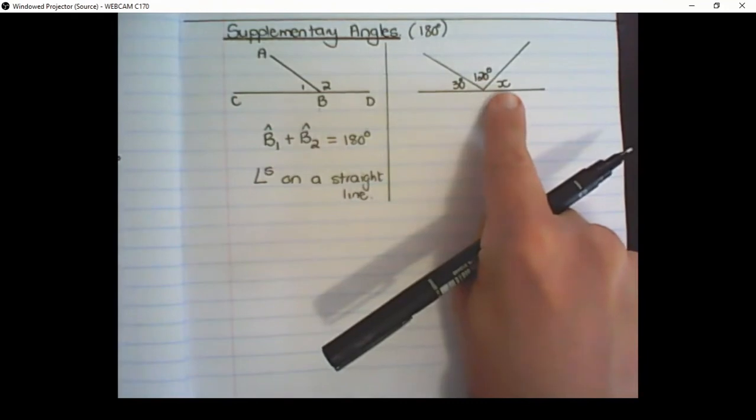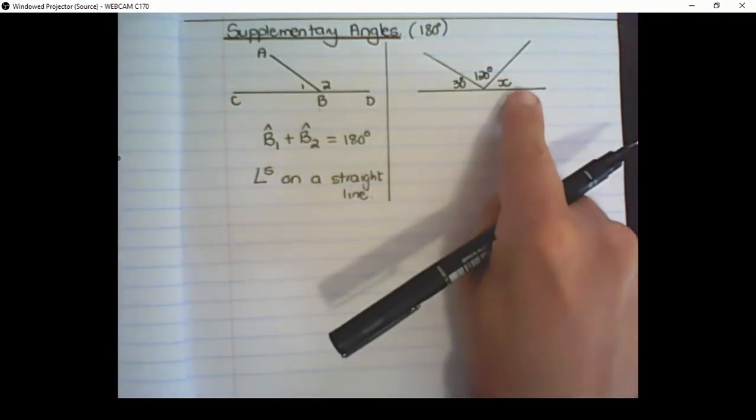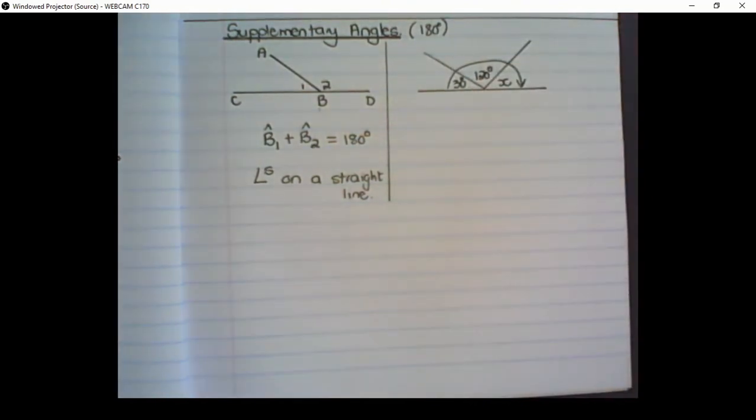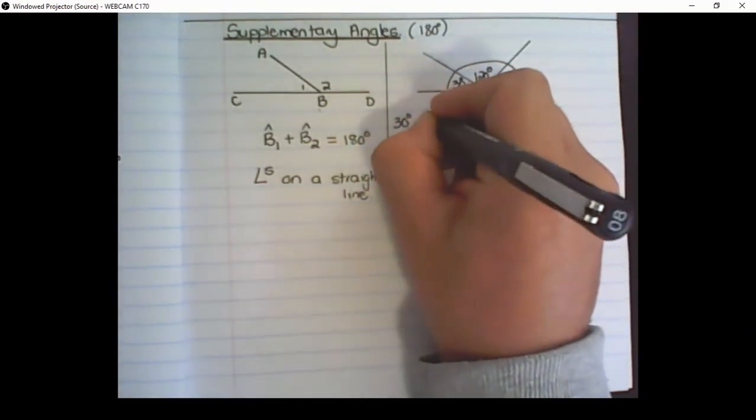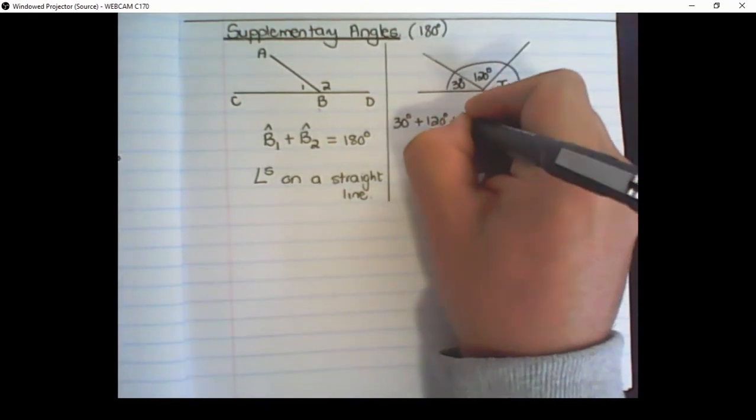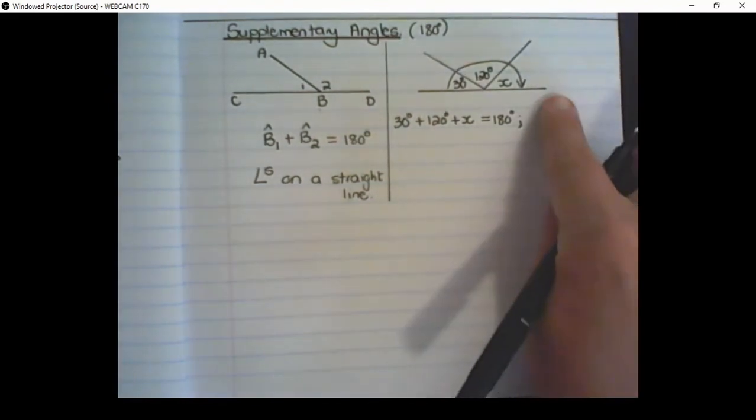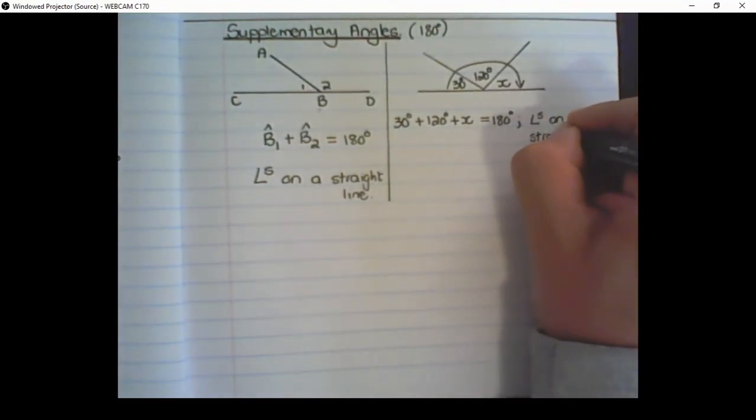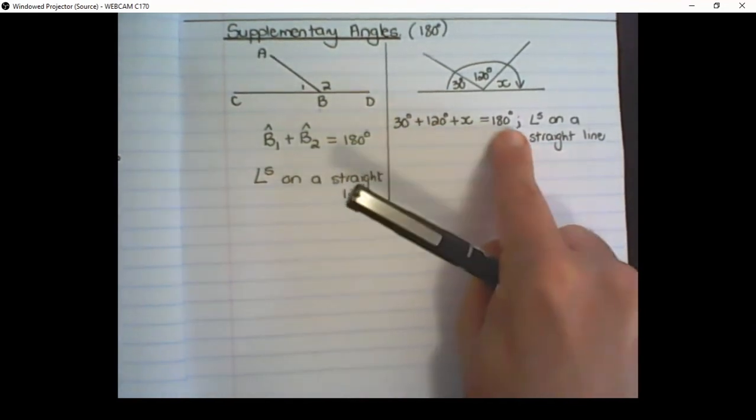So if I want to solve X and this is a straight line, then I can use the angles on a straight line that are supplementary. So all three of these angles will add up to 180 degrees. The way we would write it is we can say 30 degrees plus 120 degrees plus X is equal to 180 degrees. And the reason, and remember in geometry we always need to write a reason, we say angles on a straight line. That is the reason why this statement is true.